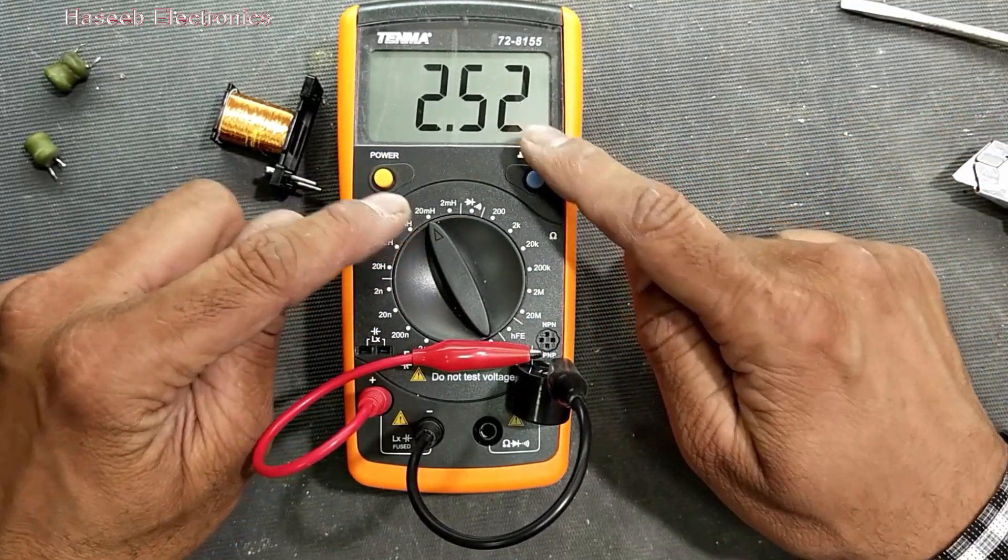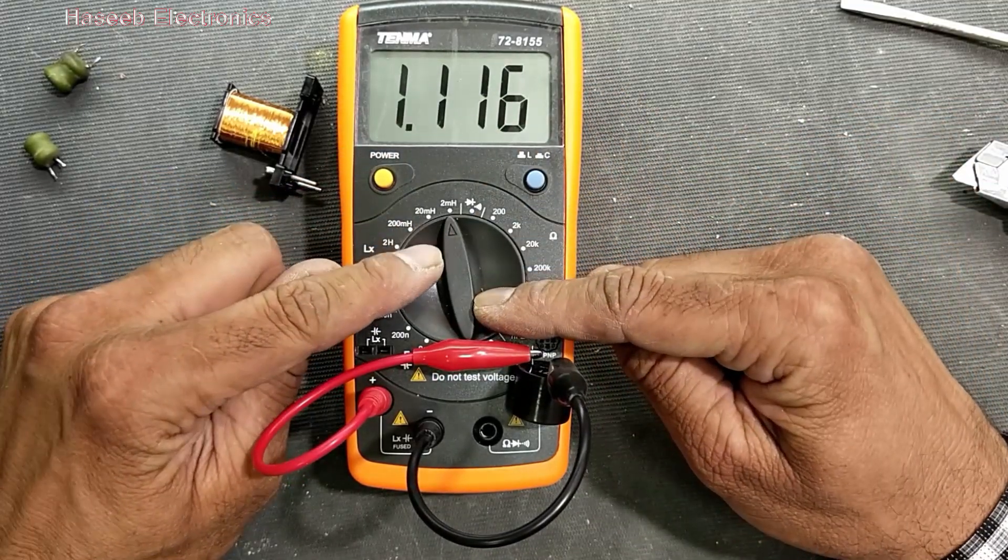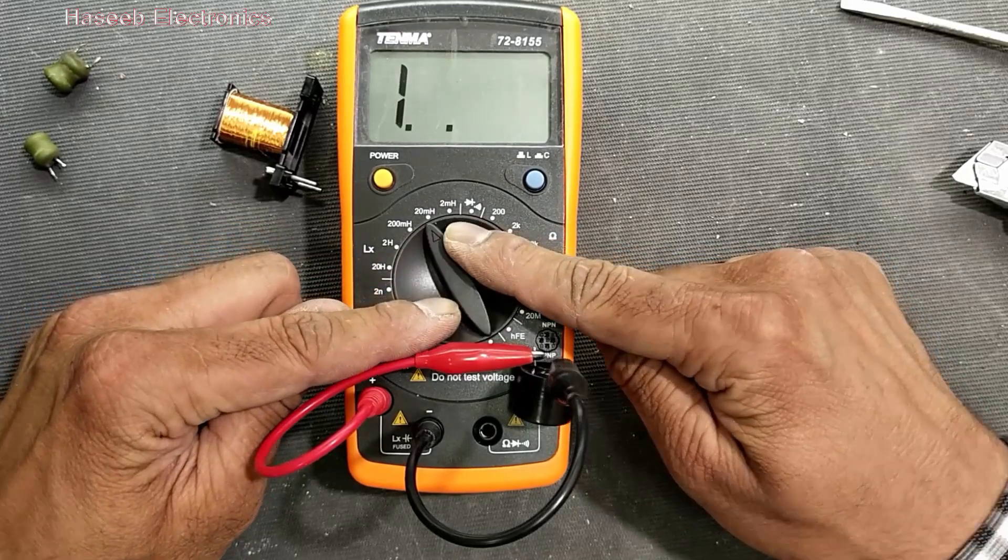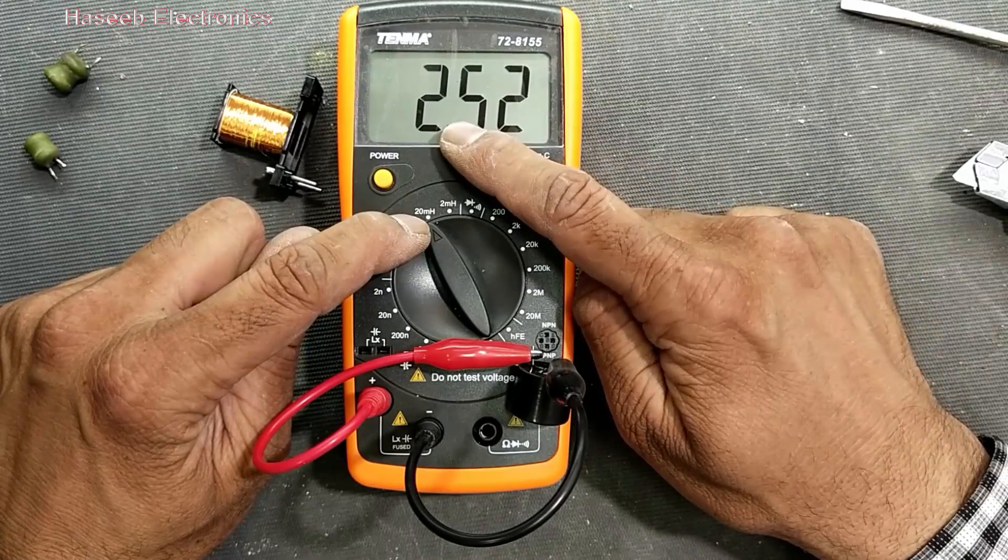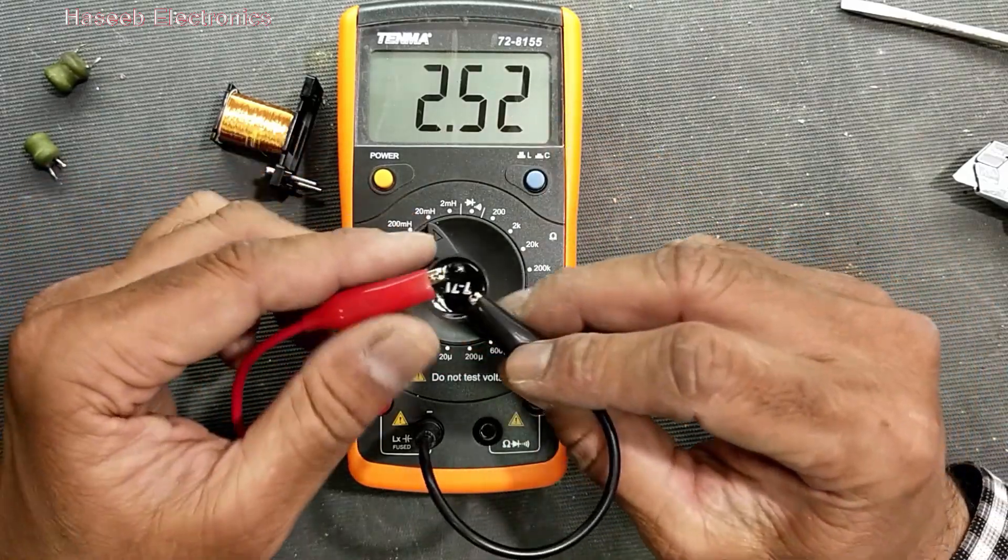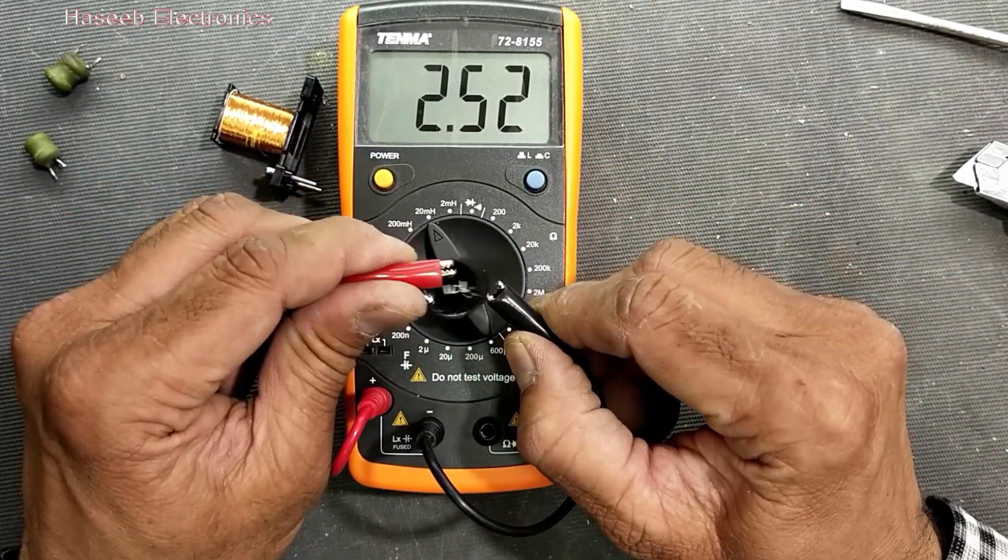For good reading we have to select a good range. Here it will give over range, so we have to come here. In 20 millihenry, we are taking 2.52 millihenry. So this is the value of this inductor.